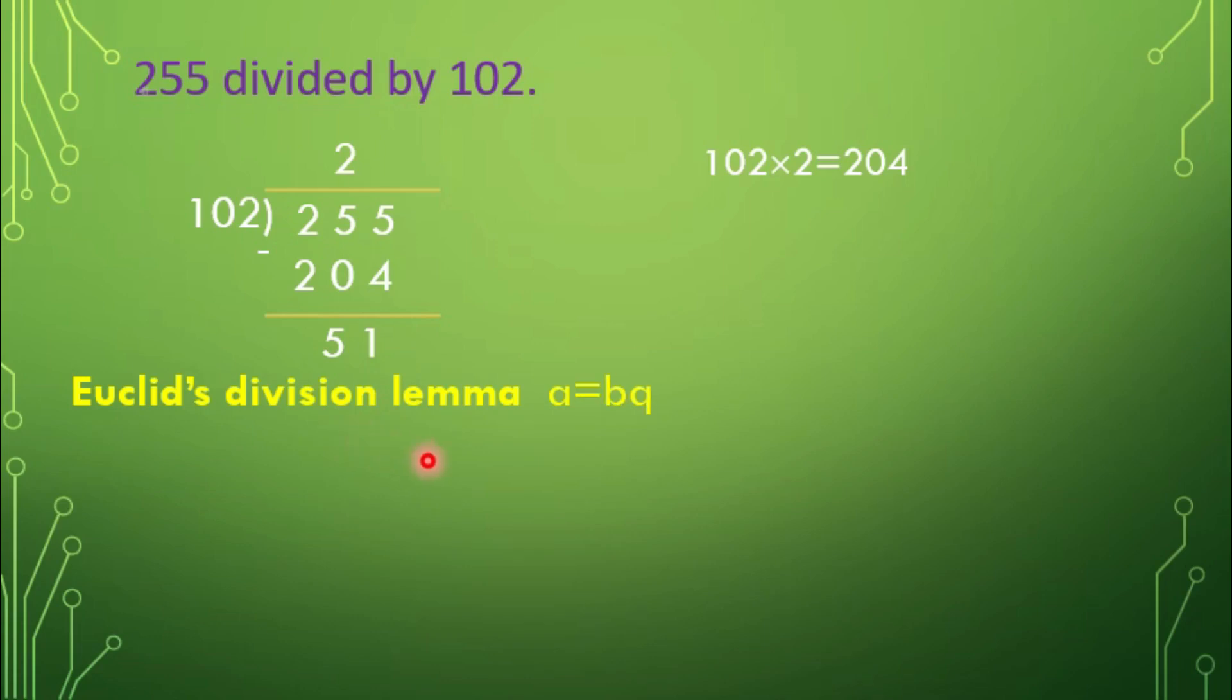Now, use Euclid's Division Lemma. A equals BQ plus R, R lies between 0 and B. We get here A equals 255, B equals 102, Q equals 2, and R equals 51.